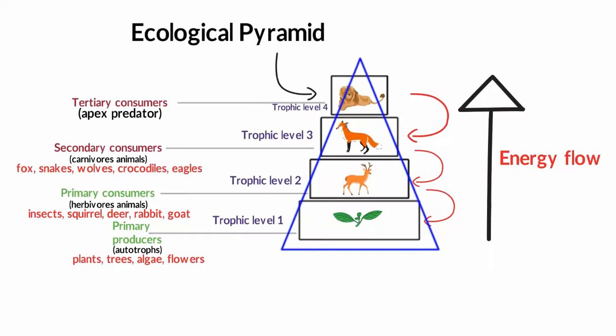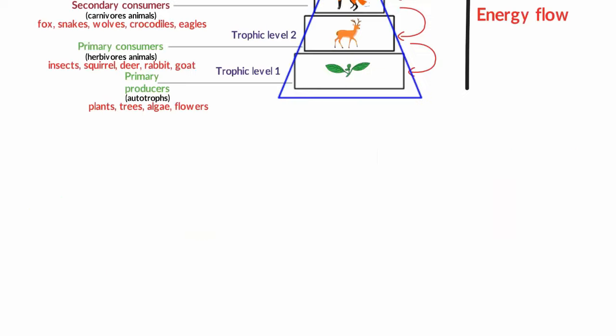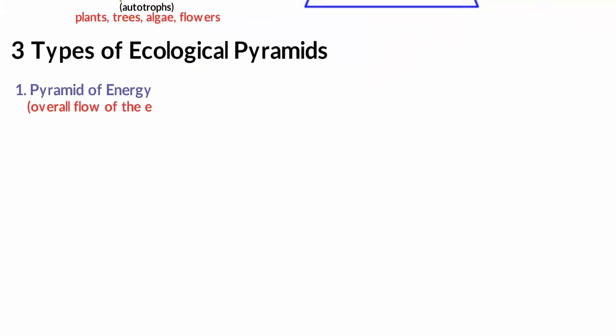Alright then, now that you understood what an ecological pyramid is, now we will understand the three types of ecological pyramids. The first one is the pyramid of energy. This type of pyramid describes the overall flow of energy between one organism to another. It also shows us how inefficient energy transfer is or in other words, there is a considerable loss of energy in the form of heat.